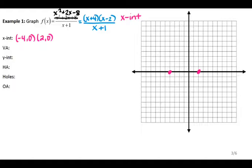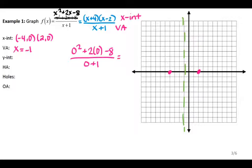Your vertical asymptotes come from the zeros of the denominator. So I have a vertical asymptote at x equals negative 1. So I can go ahead and graph that, x equals negative 1. My y-intercept comes from plugging in 0. So I have 0 squared plus 2 times 0 minus 8 over 0 plus 1, and that gives you negative 8. So my y-intercept is 0, negative 8.